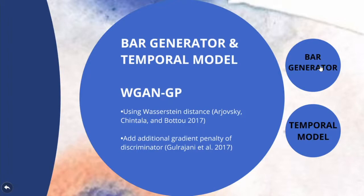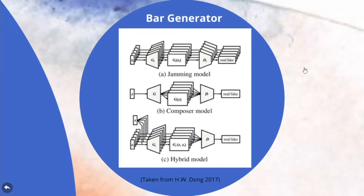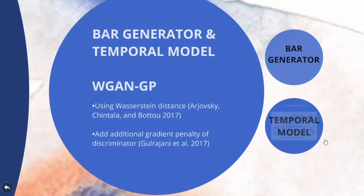Inspired by real-world composing methods, we may have different kinds of music professionals cooperate or work independently. In the jamming model, we have 5 generators and 5 discriminators for each track — like 5 professional musicians working independently. The composer model is like a composer with prior knowledge of 5 instruments who can make a sound alone. The hybrid model has 5 musicians working together to satisfy a strict composer with their own prior knowledge. We prefer the hybrid model because it can best mimic human composing.